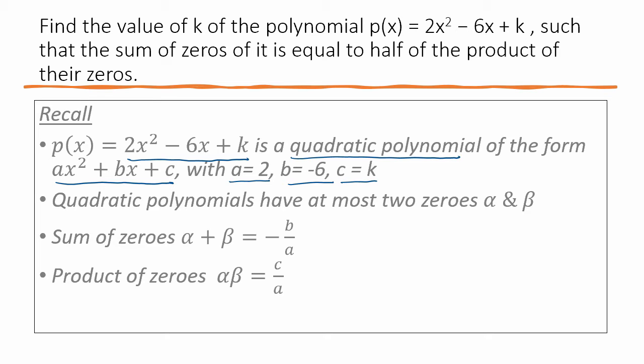Second thing to remember is in a quadratic polynomial, you have at most two zeros, alpha and beta. And then you can see that the sum is given by one equation and product is given by another equation of the zeros.